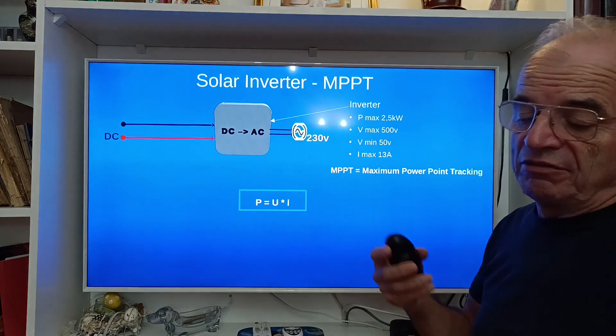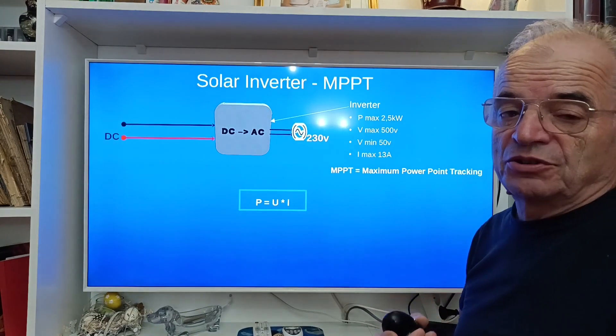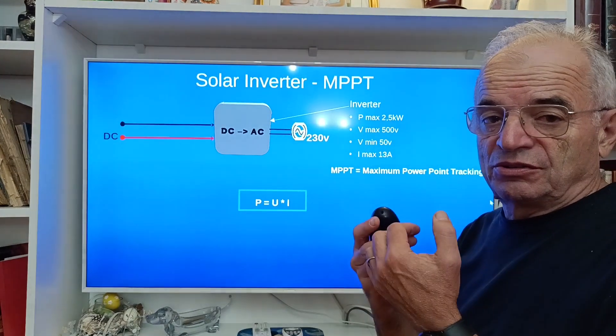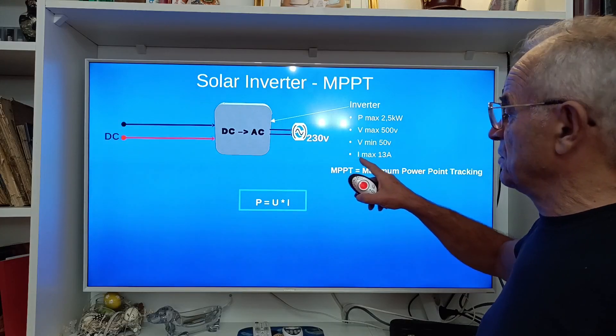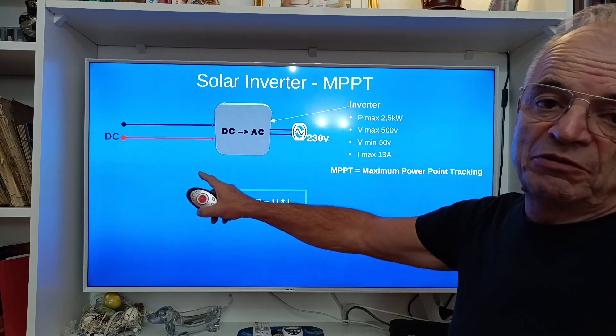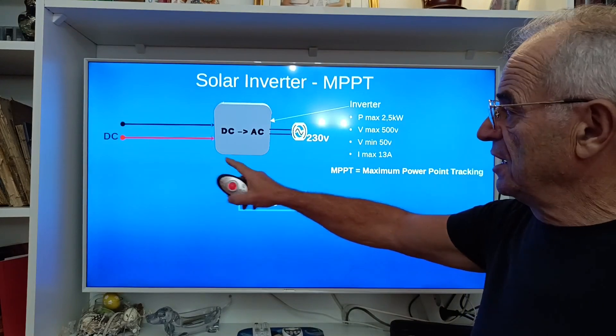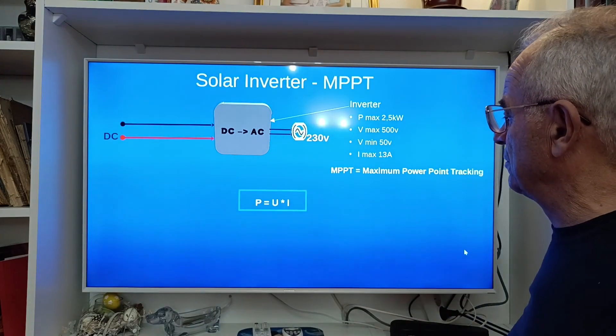50 volts when you have six panels in serial is the configuration where you have very low sun or low light outside. And the maximum current is 30 amps. We have a maximum of 11 amps with our panels, so 30 amps is okay. So this inverter is suitable for our configuration.